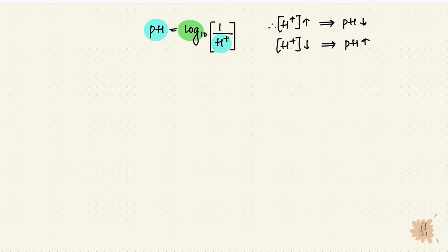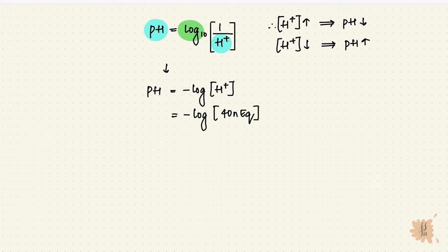This equation can be rewritten as pH equals minus log of the hydrogen ion. If we put the normal plasma hydrogen ion concentration into the equation — minus log of 40 nanoequivalents — we get 7.4. This is the normal pH of blood. Like all normal values, it's a range: 7.37 to 7.42. For convenience, we take it as 7.4.